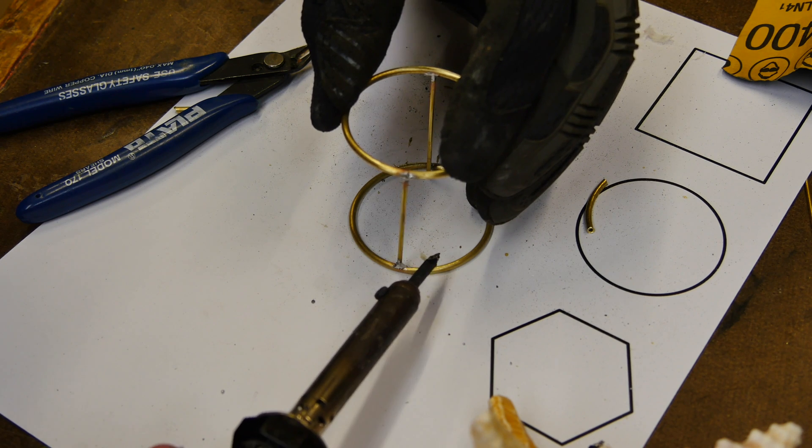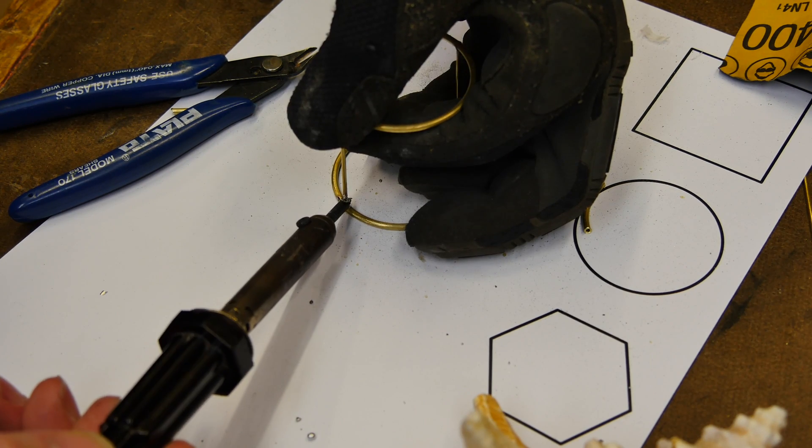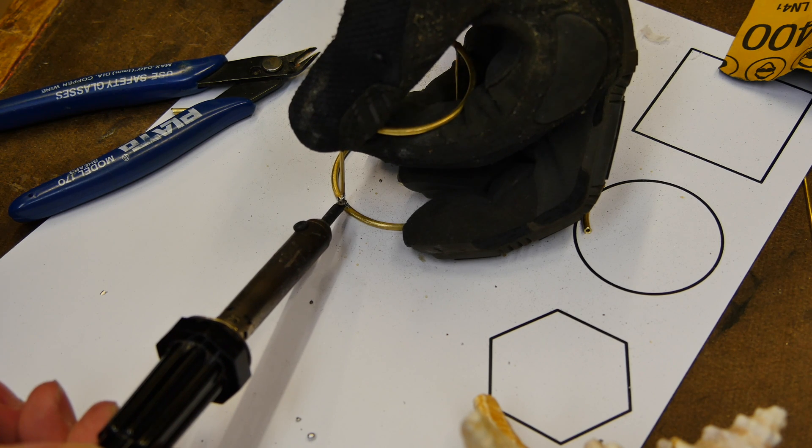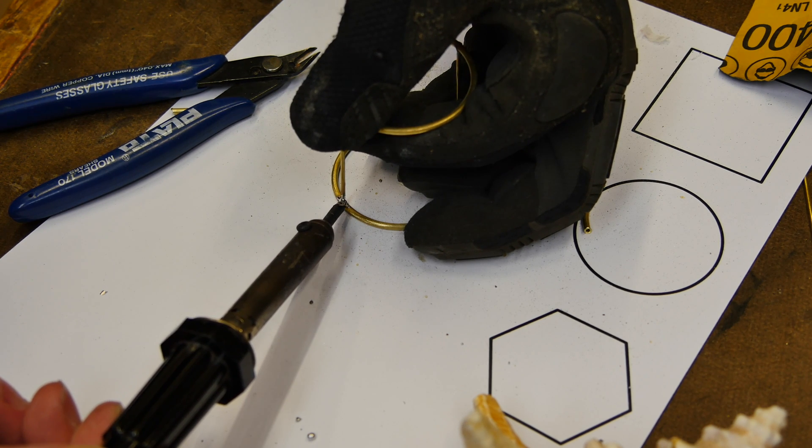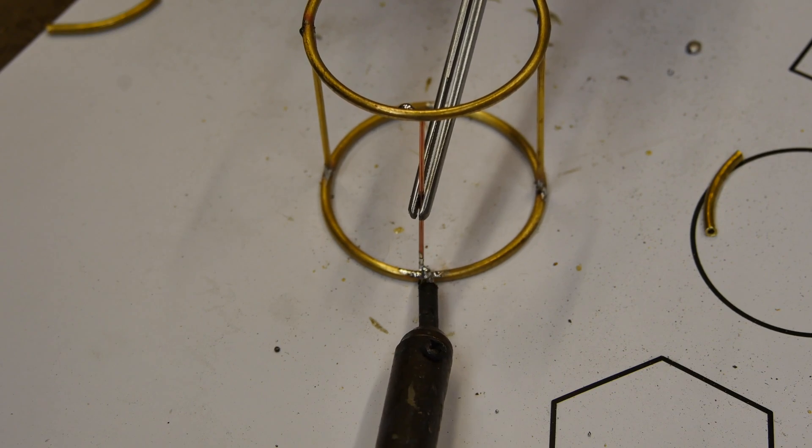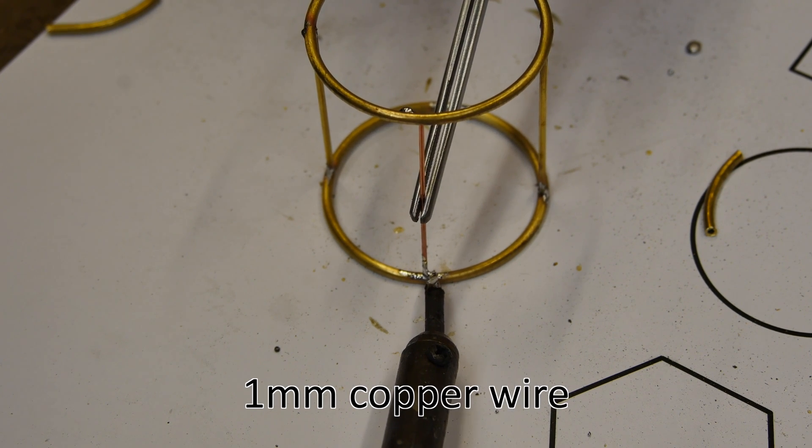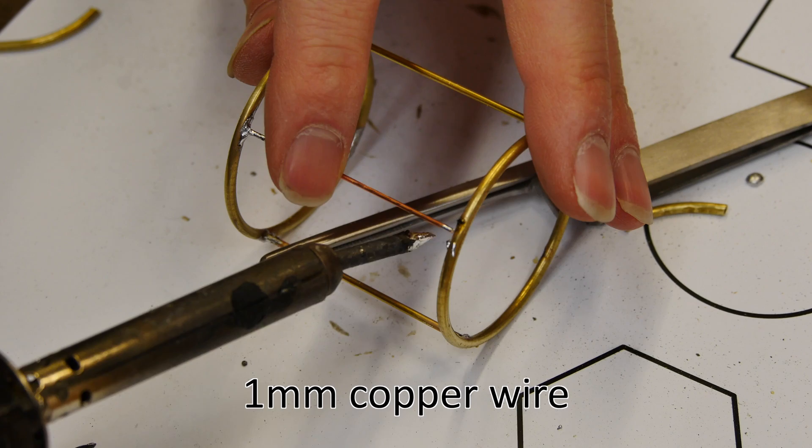So we'll solder these in with the cross lock tweezers. Because it's brass it does take a little bit more heat to heat it up and get it soldered correct. I'm even wearing a pair of gloves here so that I can hold the metal so I don't burn myself.